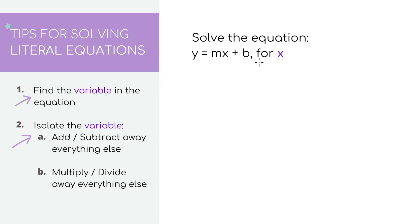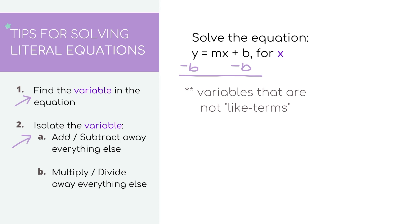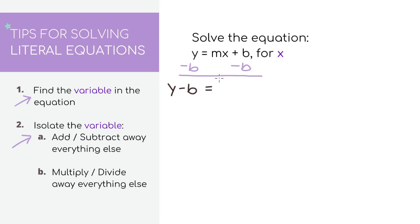First, let's look at things we can add and subtract away from the side with the x. Since there's a plus b, we need to get rid of it by doing the opposite and subtract b. Always remember everything you do to one side, you need to do to the other. Since y and b are variables, there's no way for us to combine them, so we can just say that y minus b equals mx.